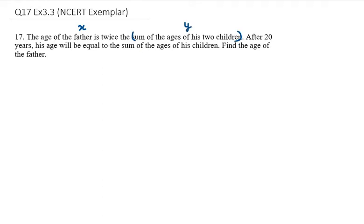So I will take it as y. Let the present age of father be x and present age of sum of ages of his two children be y.